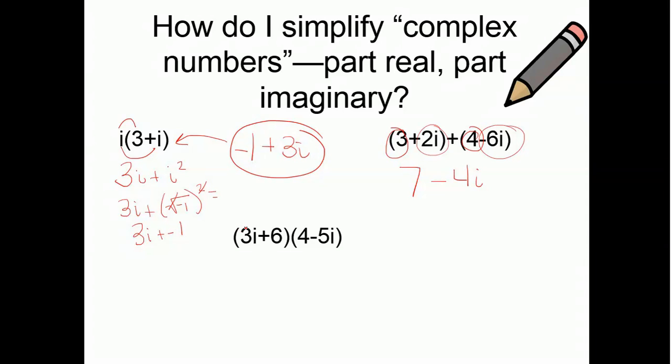Let's do some distributing on this one. So, I have 3i times 4. So, that's 12i. 3i times negative 5i is going to give me negative 15i squared. Because I had 2 i's, right?